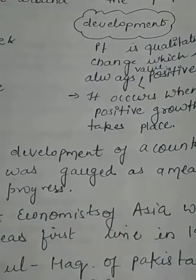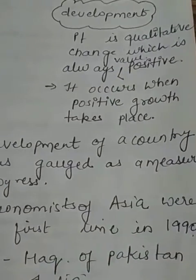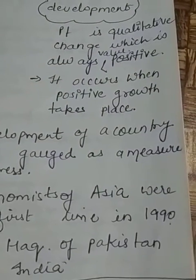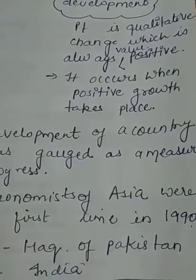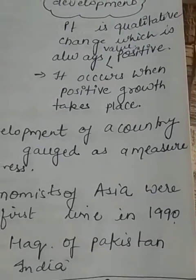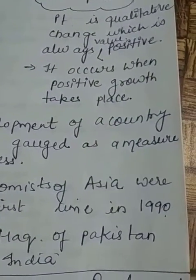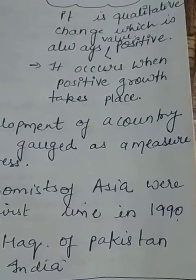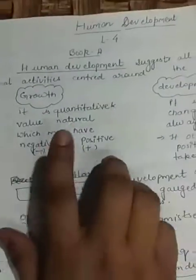For example, if the population of a city grows from 5 lakhs to 10 lakhs over a period of time, we say that city has grown. But if the basic facilities of life such as water, housing, power, and transport remain the same and do not grow in proportion to population growth, then growth has not been accompanied by development.